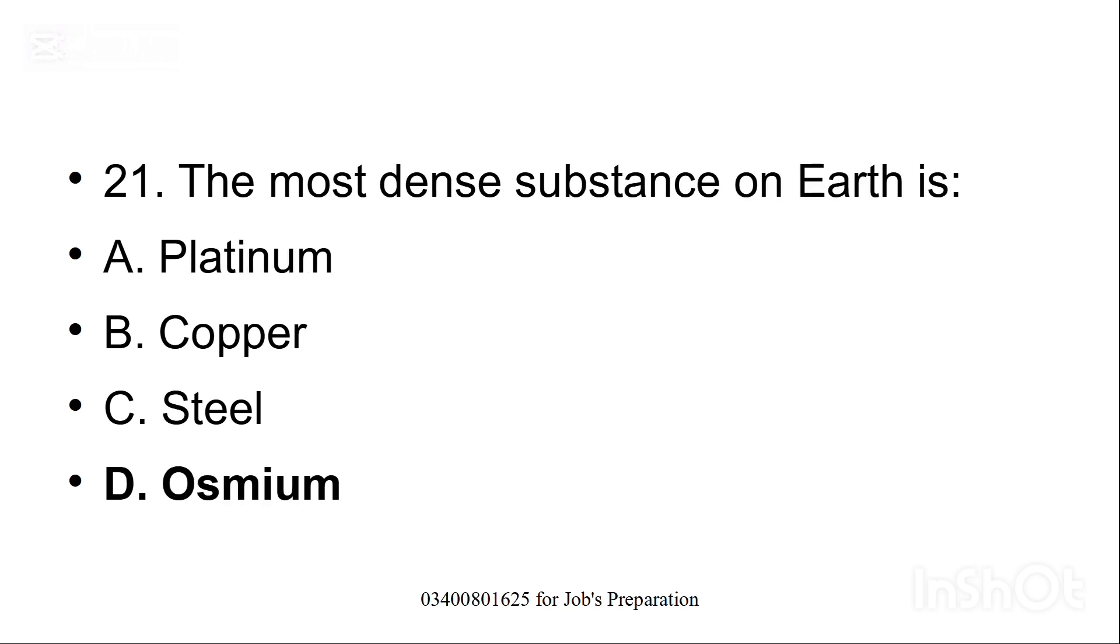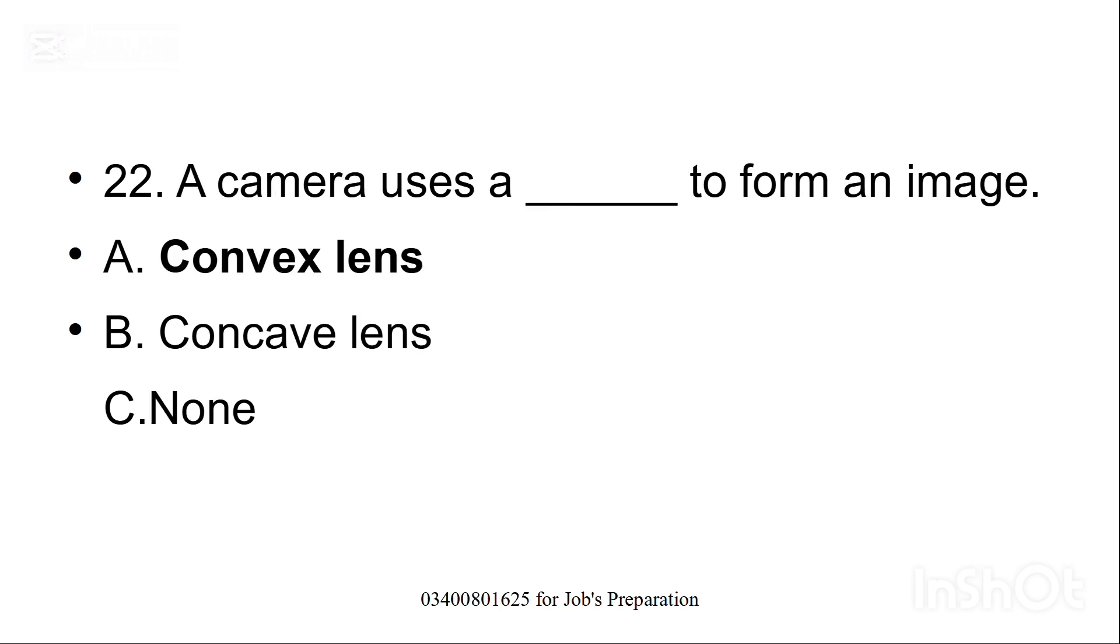The most dense substance on earth is, the most dense, dense ka matlab hota hai thik ghara. Woh kaunsa substance hai? D, Osmium is the correct answer. The camera uses a dash to form an image. Woh kaunsa lens hai jo camera mein hota hai image banne ke liye? Option A, convex lens is the correct option.